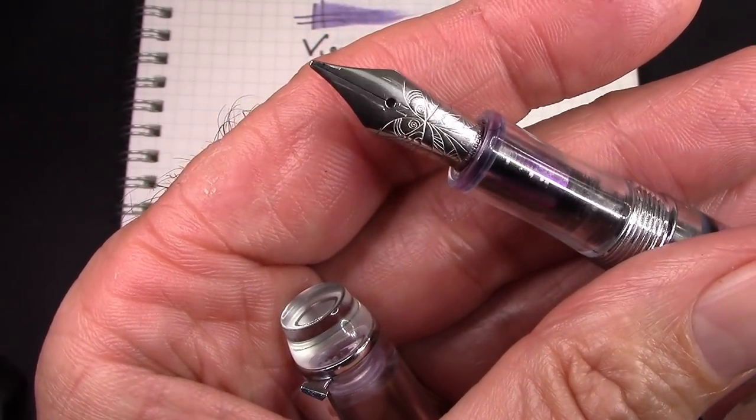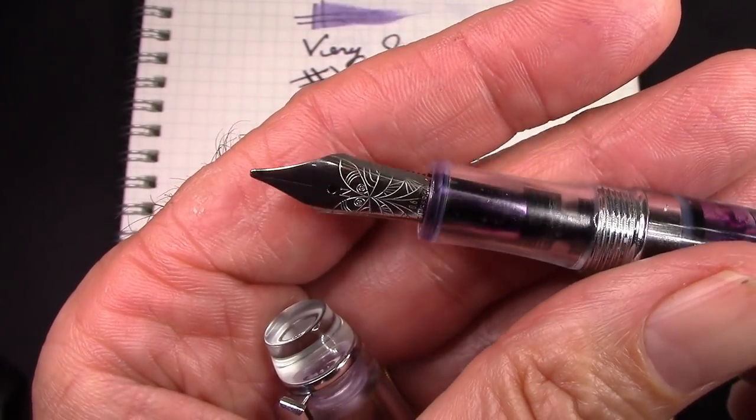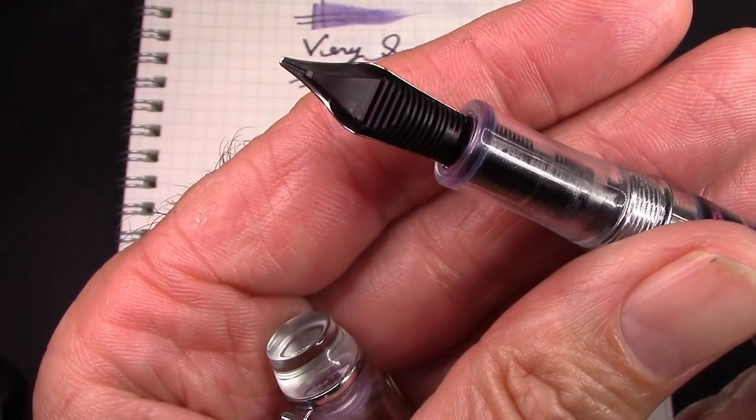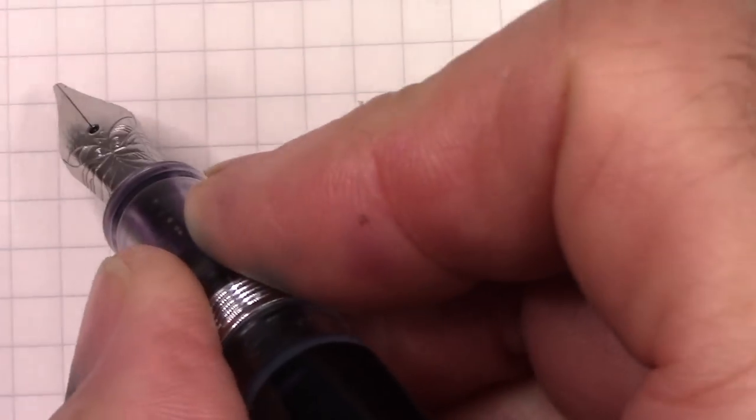I've now put in the 0.6 millimeter Nemosine nib, and I'm impressed again. Let's just see how this puts down ink.